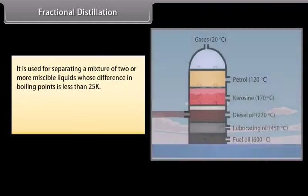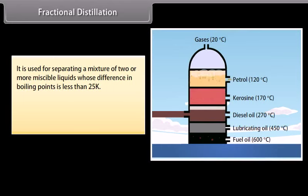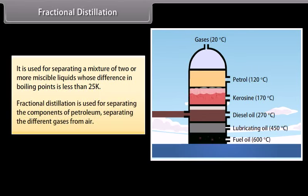Fractional distillation is used for separating a mixture of two or more miscible liquids whose difference in boiling points is less than 25K. It is used for separating the components of petroleum, separating different gases from air, etc.